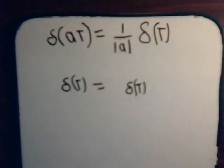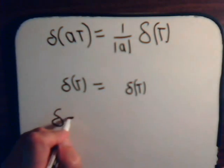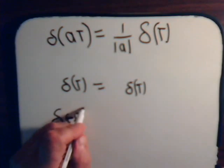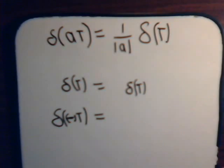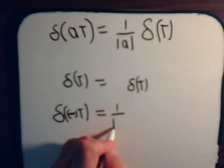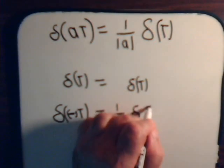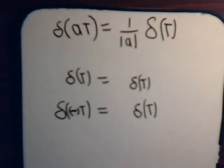1 over 1 is 1. If a is minus 1, then that's equal to 1 over absolute value of minus 1 times this. And of course, this is just 1. 1 over 1 is 1, leaving us with this.